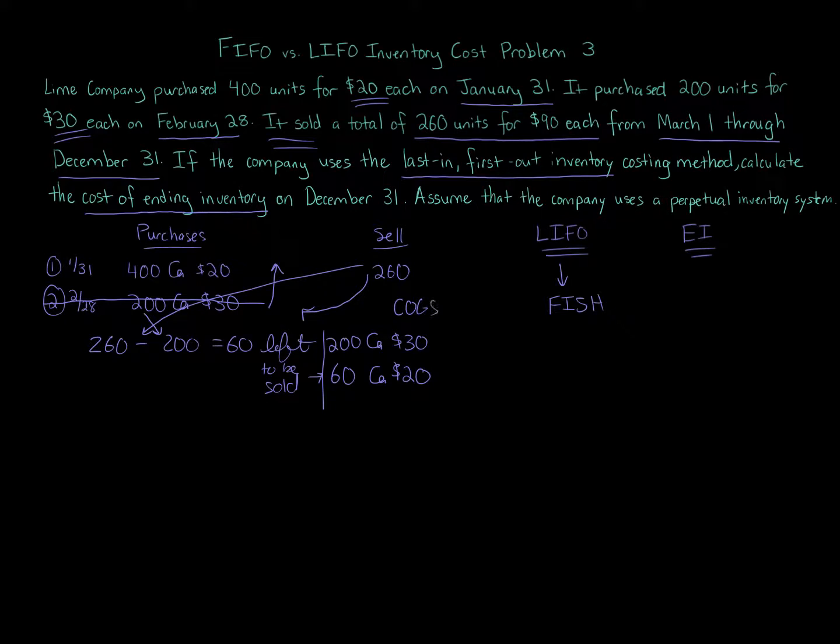If you're calculating cost of goods sold, you would multiply 200 times 30 and 60 times 20. You would get those numbers, add them up, and that would give you cost of goods sold. But this question we're asked about ending inventory. So if we used 60 of layer one, what's left?